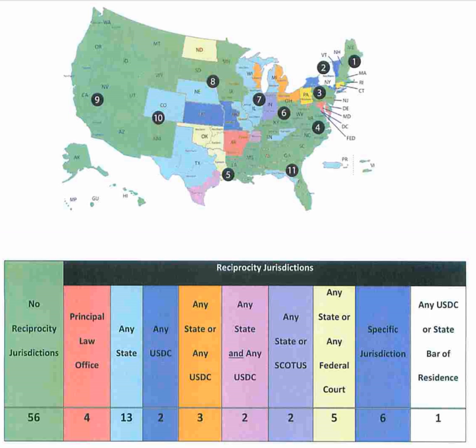In addition to their original jurisdiction, the district courts have appellate jurisdiction over a very limited class of judgments, orders, and decrees. In order to represent a party in a case in a district court, a person must be an attorney at law and generally must be admitted to the bar of that particular court.